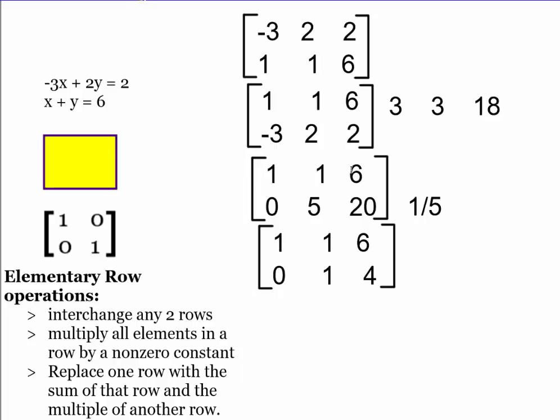So if I multiply that whole row by a negative 1, I'll have 0 times negative 1 is still going to be 0. Now, I've got 1 times negative 1 will give me a negative 1. And then I've got 4 times negative 1 will give me a negative 4.